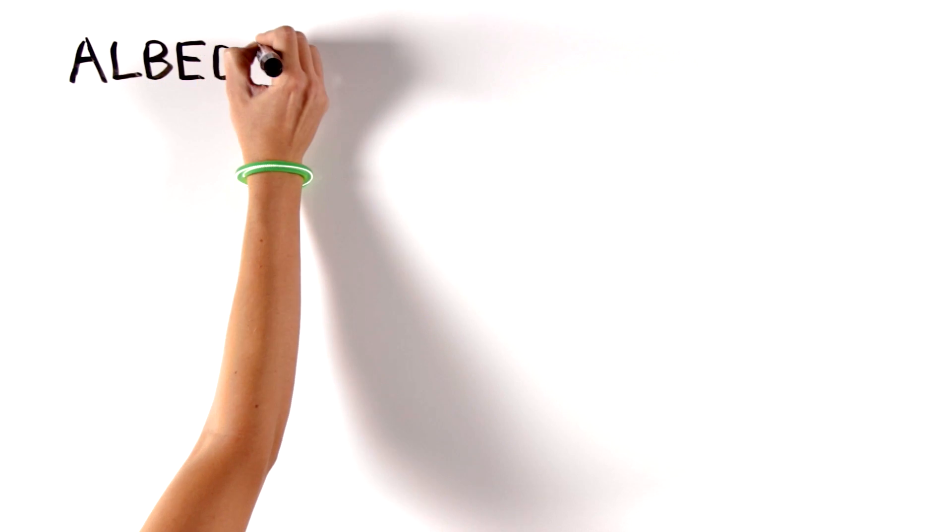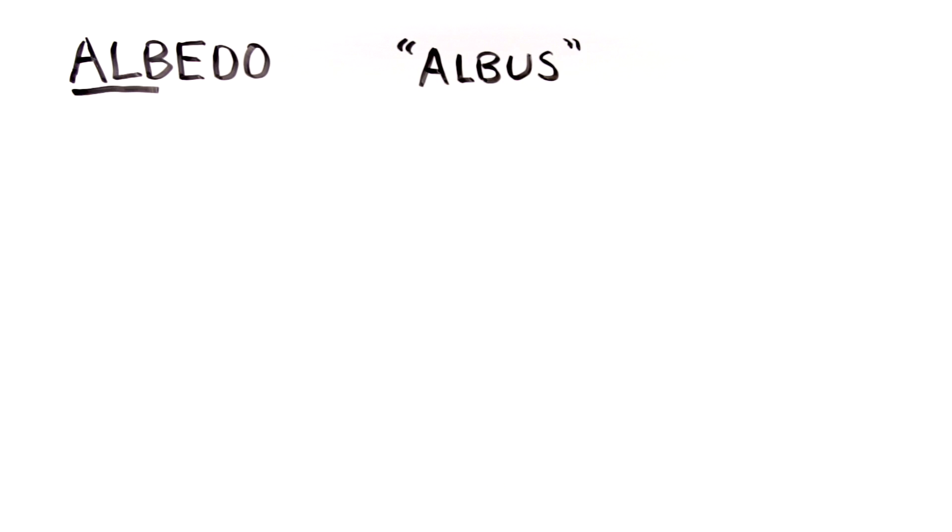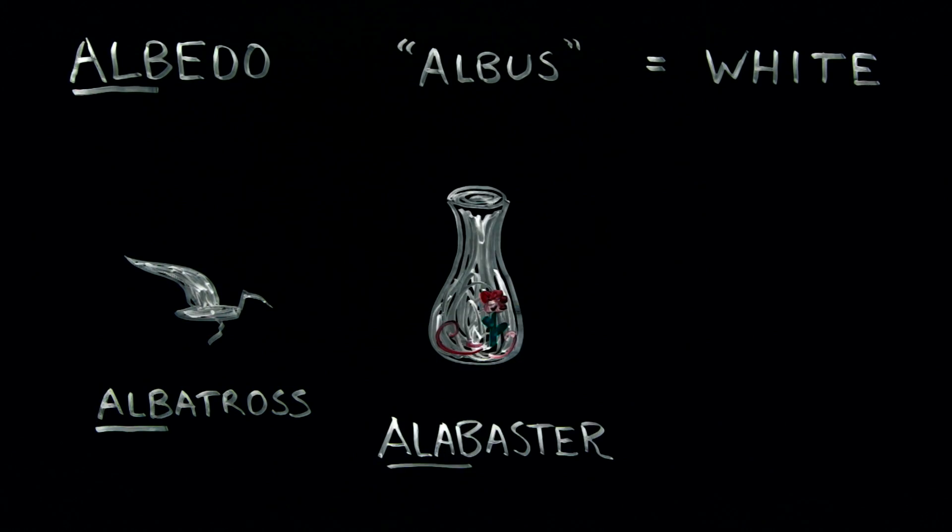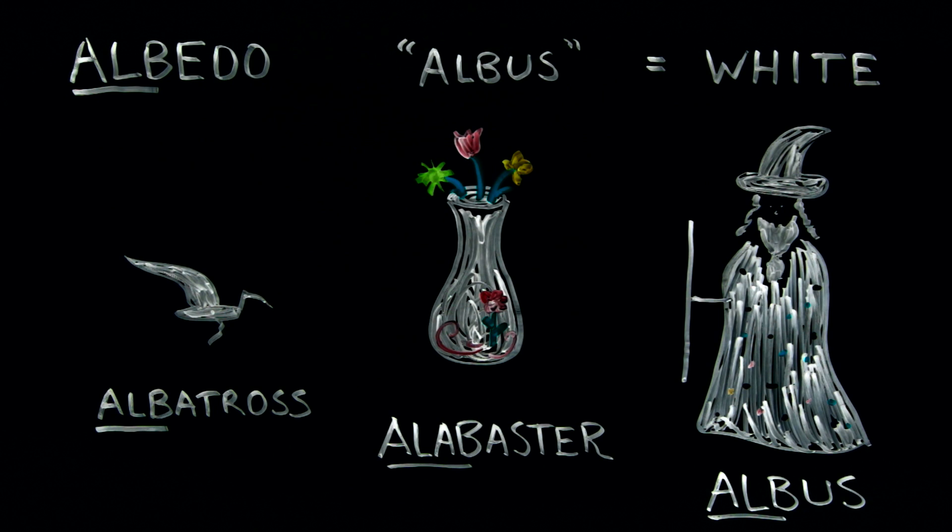What does albedo mean? It's a word created from the Latin word albus, which means white. The root of the word albus is used in many common English words.